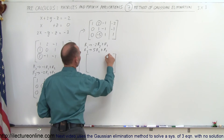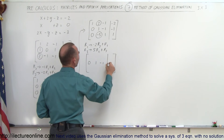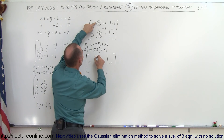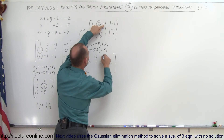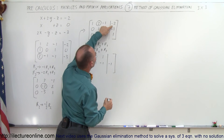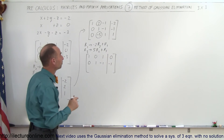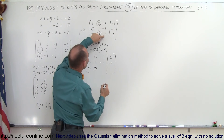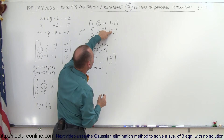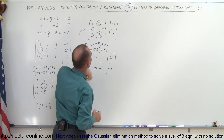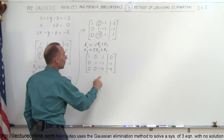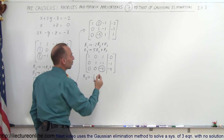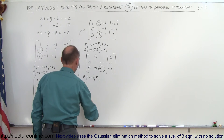Our matrix now becomes as follows. The middle row doesn't change: 0, 1, negative 1, negative 1. The top row: this is still 1; negative 2 times 1 added to 2 is 0; negative 2 times negative 1 is positive 2 added to negative 1 is 1; negative 2 times negative 1 is positive 2 added to negative 2 gives 0. For the third row: 0 remains 0; 5 times 1 added to negative 5 is 0; 5 times negative 1 is negative 5 added to 1 is negative 4; 5 times negative 1 is negative 5 added to 1 is negative 4. Next, we want to turn this leading entry into a 1, by taking the third row and replacing it by negative one-quarter times the third row — in other words, divide the whole row by negative 4.